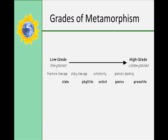Slate is a product of low-grade metamorphism, which means that not terribly great burial temperatures and pressures are required. Schist and gneiss are produced by medium to high-grade metamorphism; in some cases gneisses are produced by higher-grade metamorphism than schists. Low-grade metamorphic rocks tend to be fine-grained, while high-grade metamorphic rocks tend to be coarse-grained, though grain size is also dependent on the grain size of the protolith.